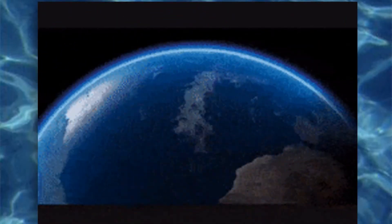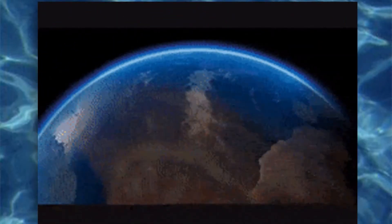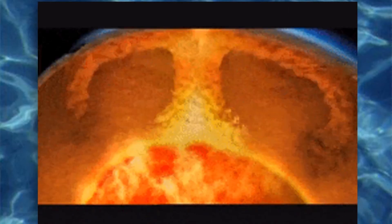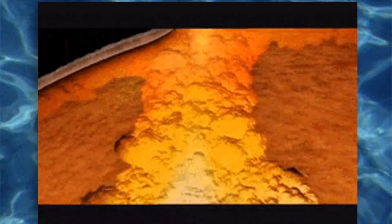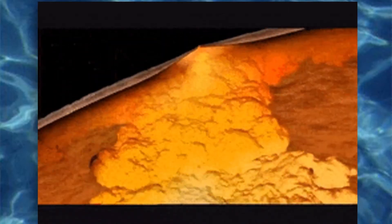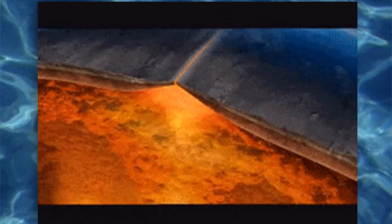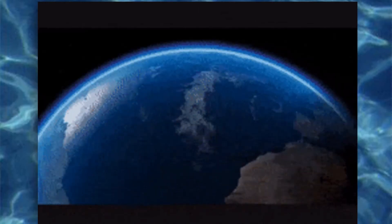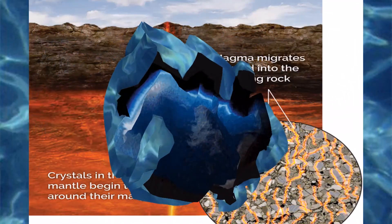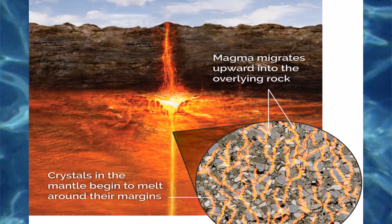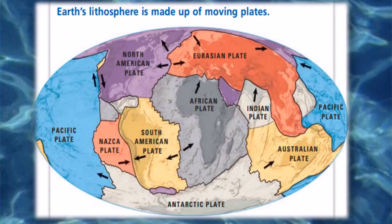Tectonic plates fit together like a jigsaw puzzle that makes up the surface of Earth, comparable to the cracked shell of a hard-boiled egg. Most large tectonic plates include both continental crust and oceanic crust. The thicker continental crust rises above the ocean, while the rest of the plate is thin oceanic crust, or seafloor, and is underwater. The next time you look at the continents on a world map, remember you are seeing only the part of Earth's crust that rises above the ocean.